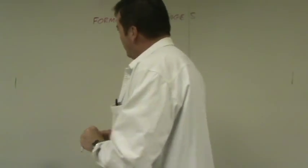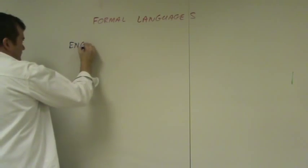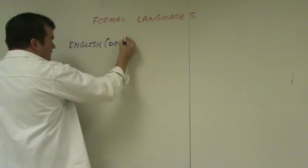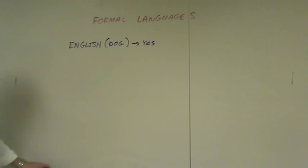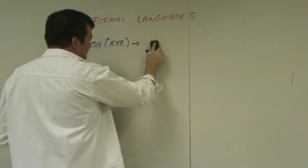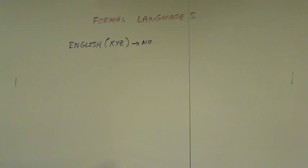A formal way of defining a computation would be a language. For example, English is a language. If English were a function and you passed in a word, it would tell you yes or no whether it is a word. So if you passed in 'dog,' it would answer yes, because dog is a word in English. If you put in 'XYZ,' it would answer no. We're basically going to define a computation based on languages.